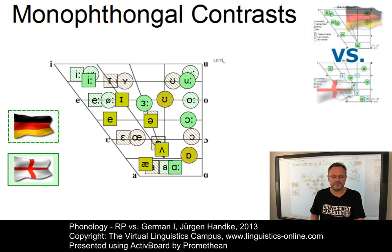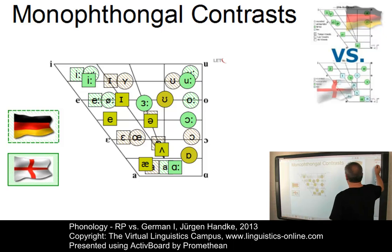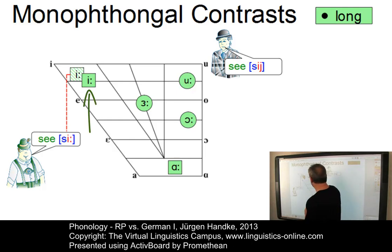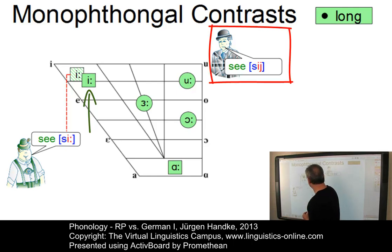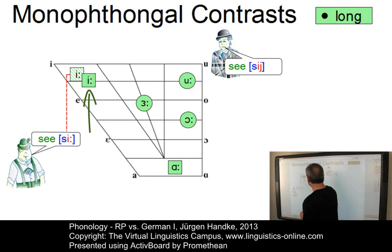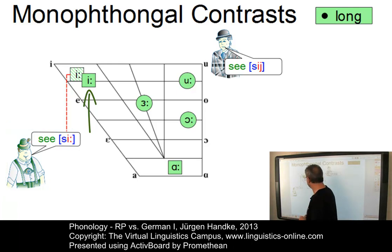Let us now look at each RP monophthong, listen to its RP value, and produce a worst-case scenario from the point of view of a German learner — that is, a scenario with the maximum deviation from the respective RP target value. Here are the long monophthongs of RP. The EE as in 'see' is problematic for German learners in many ways. In RP it is slightly diphthongized. Germans often slightly raise the onset and monophthongize it, just like German E, so the result would be something like 'C'. In an even worse case the result would be 'Z', because initial S is absent in German — but we will discuss that later.